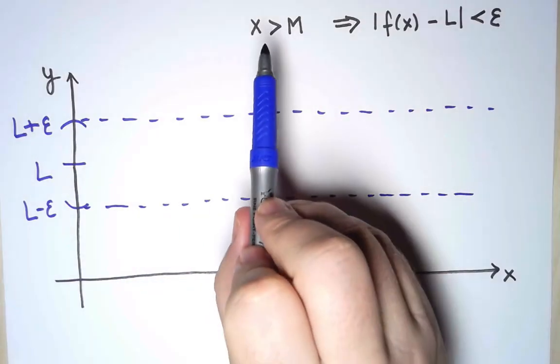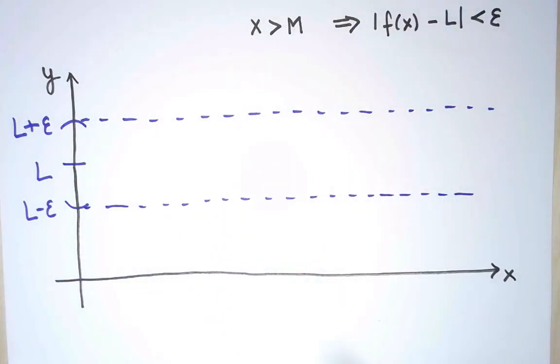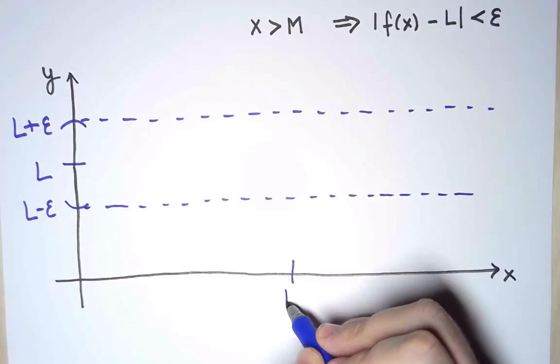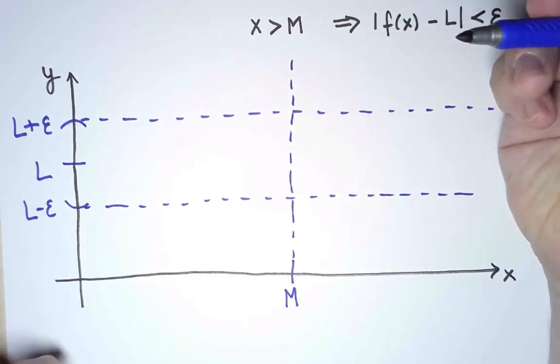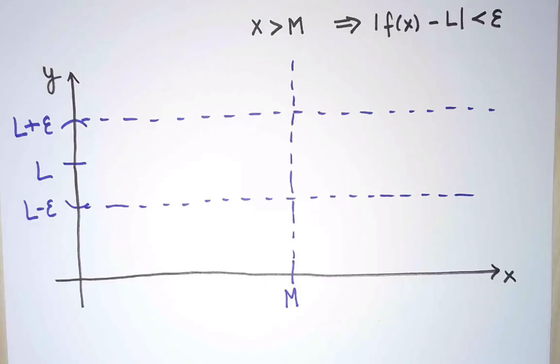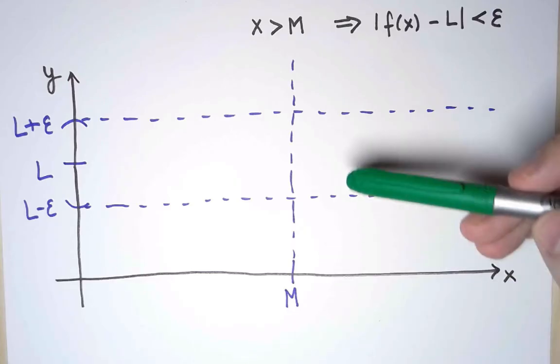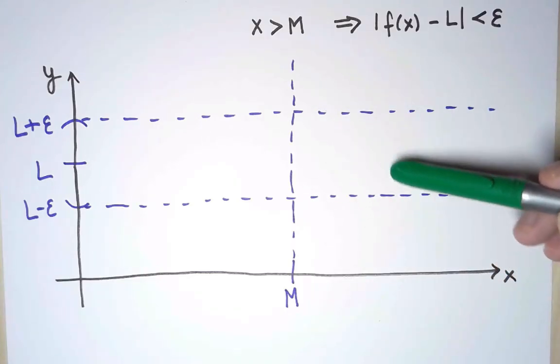On the other hand, saying that x is greater than M simply means that x is to the right of this cutoff, M. So x is here. Now, let's think about what the implication means. When x is greater than M, f must be between L-ε and L+ε, so in this window.